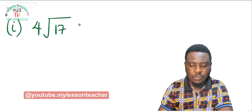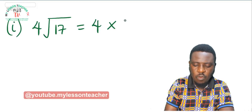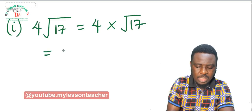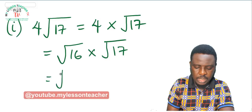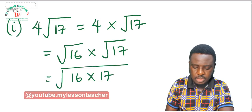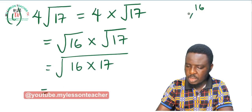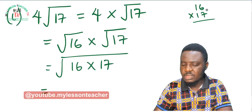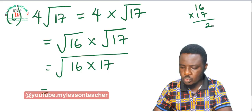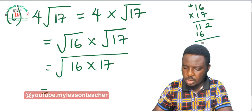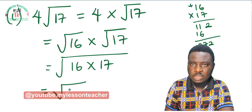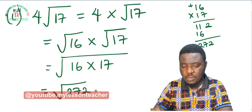Example I: 4 root 17. This can be written as 4 times root 17. Root 16 equals 4, so this becomes root 16 times root 17, which simplifies to root of 16 times 17. Calculating 16 times 17: 7 times 6 is 42, write 2 carry 4; 7 times 1 is 7 plus 4 is 11; 1 times 6 is 6 and 1 times 1 is 1 — giving 272. So the answer is root 272.